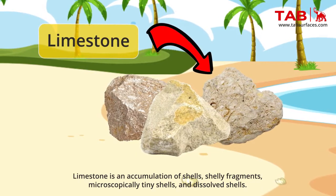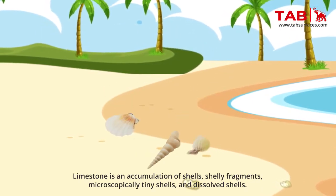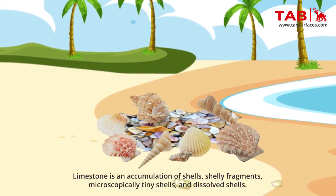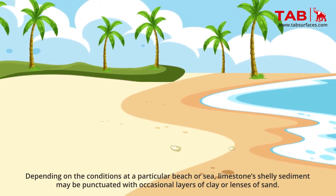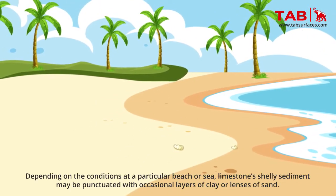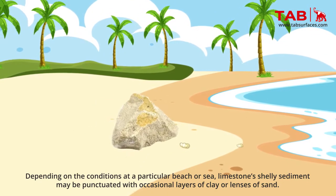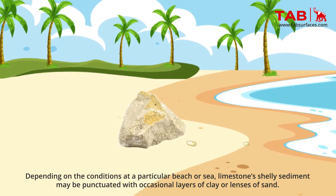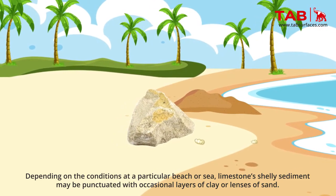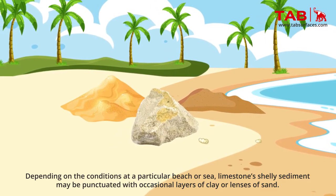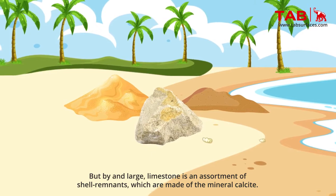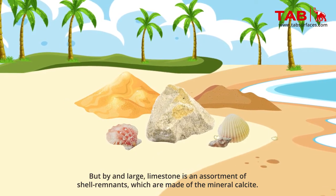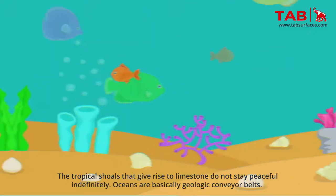Limestone is the accumulation of shells, shelly fragments, microscopically tiny shells and dissolved shells. Depending on the conditions at a particular beach or sea, limestone's shelly sediment may be punctuated with occasional layers of clay or lenses of sand. But by and large, limestone is an assortment of shell remnants, which are made of mineral calcite.